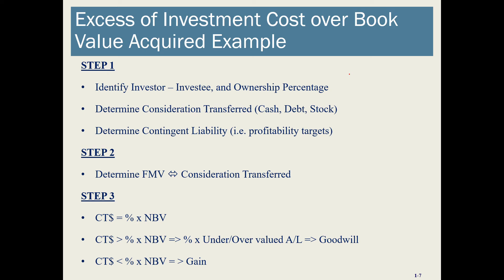Also under Step 1, consider the consideration transferred — exactly how much are we paying and how are we paying for it? Are we paying in cash, issuing a note payable, or issuing stock? This may not be complex in this chapter, but as we move on to consolidation these aspects become important. The third item under Step 1 is contingent liability, which is probably not relevant for the equity method right now but will be relevant in consolidation.